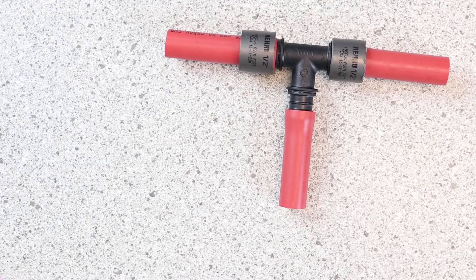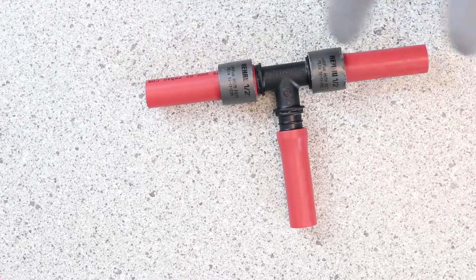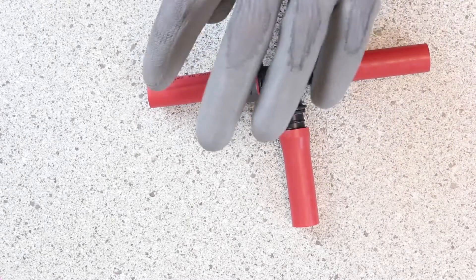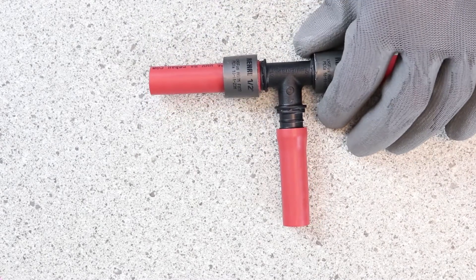If you are using a polymer fitting, the best bet is to just cut that out and then start over with a new fitting, clean edge of a piece of pipe, and also a new sleeve. So start over with all three pieces.